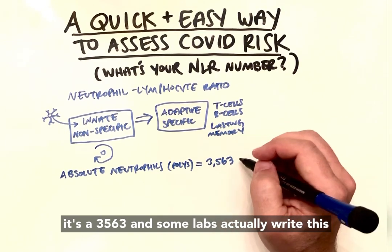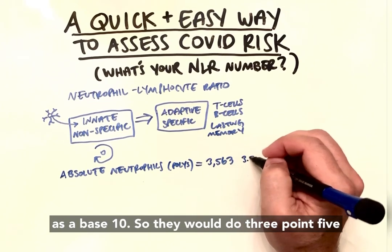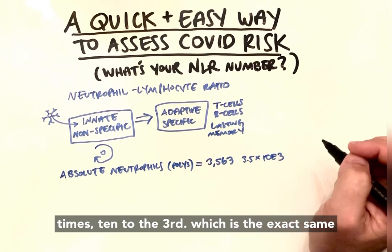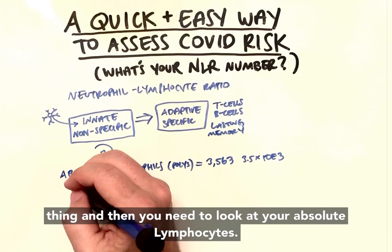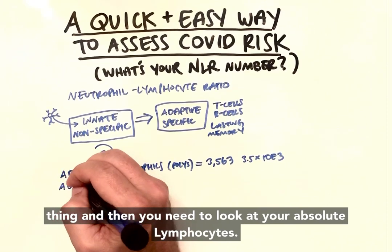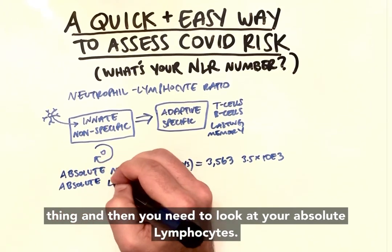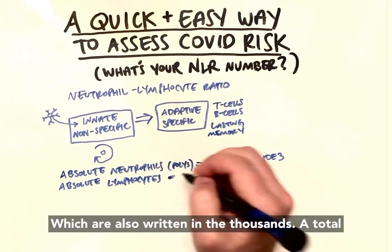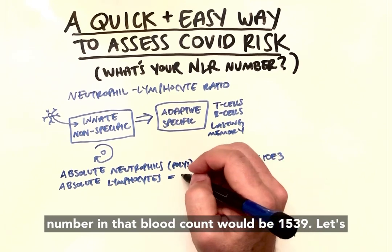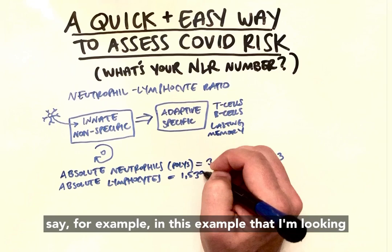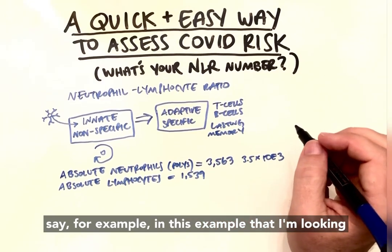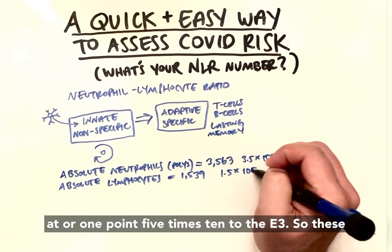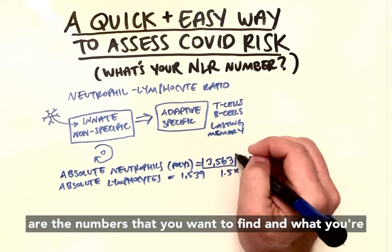Some labs write this in scientific notation, such as 3.5 × 10^3, which is the exact same thing. You also need your absolute lymphocytes, also written in the thousands — for example 1,539, or 1.5 × 10^3. Those are the two numbers you need to find.